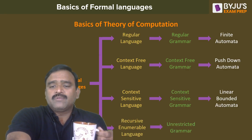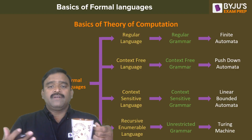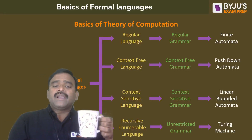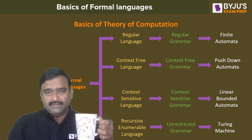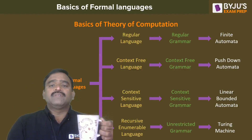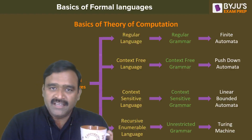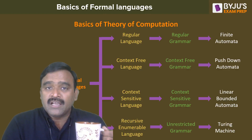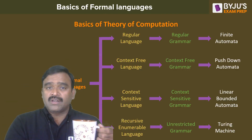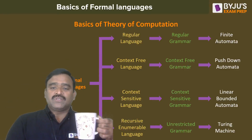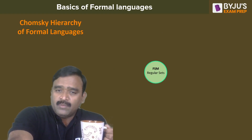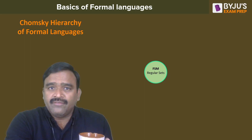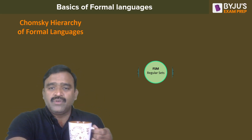There are four types of formal languages we are going to cover: regular languages, context-free languages, context-sensitive languages, and recursively enumerable languages. These are all the formal languages studied in Theory of Computation, along with their grammatical representations and machine counterparts. Chomsky has defined a hierarchy for all these formal languages.